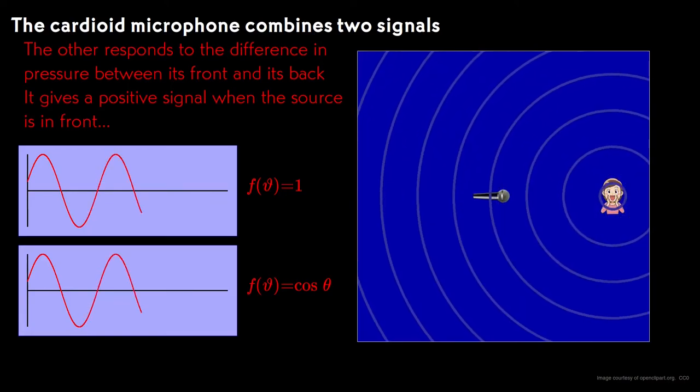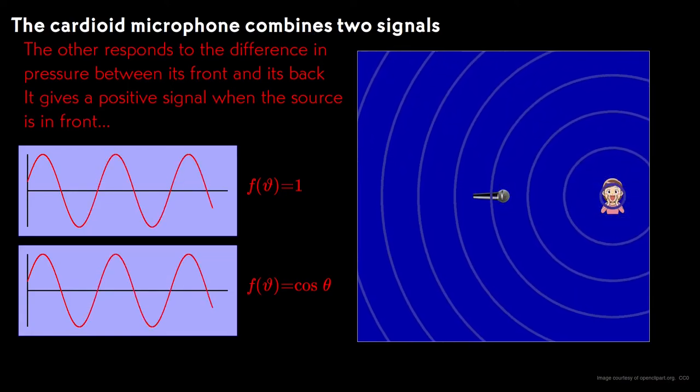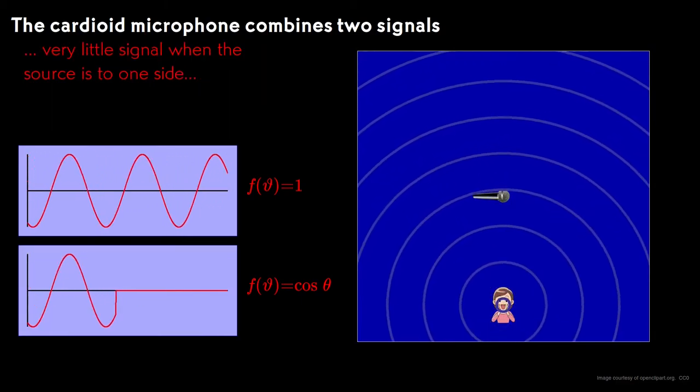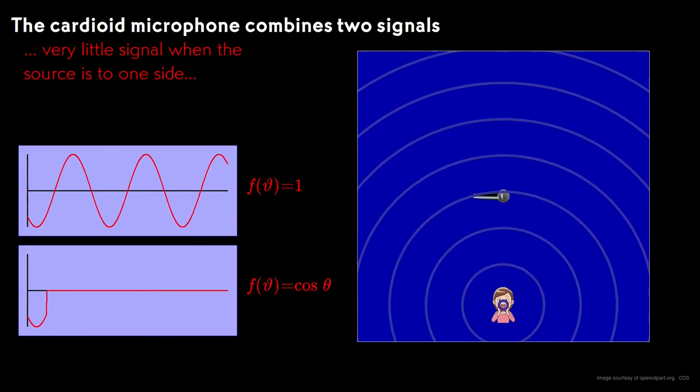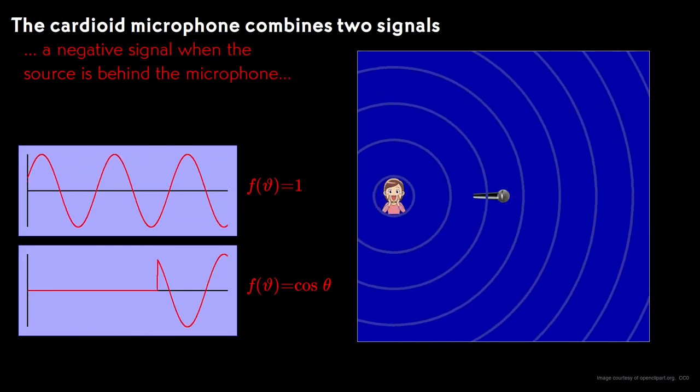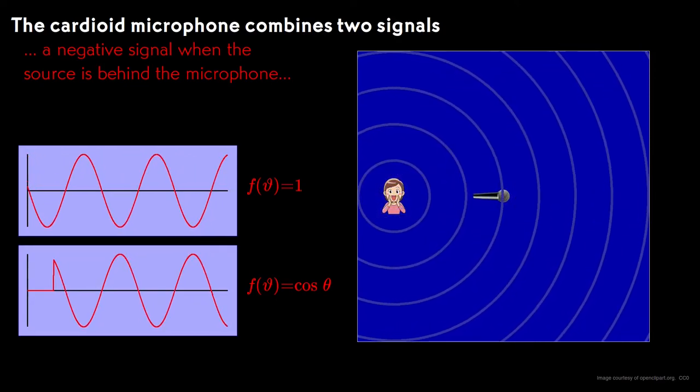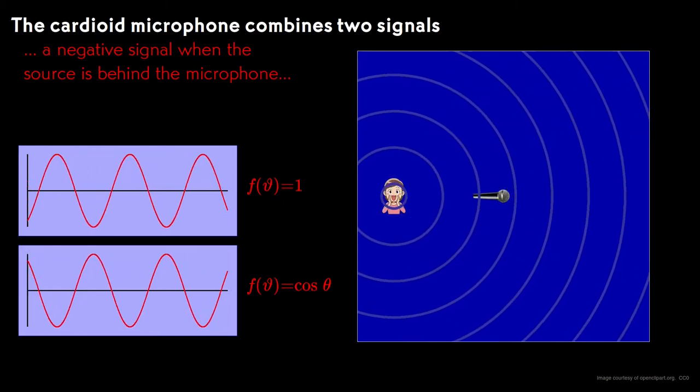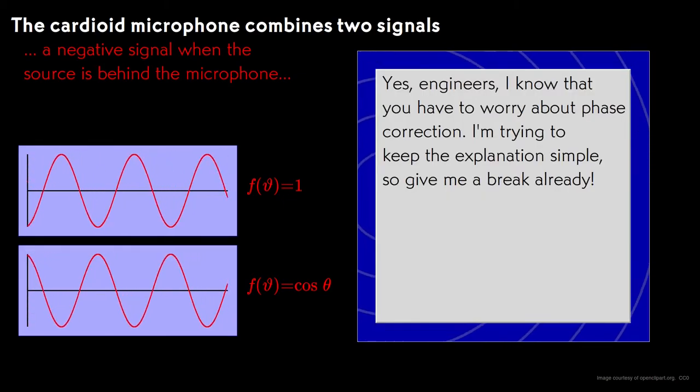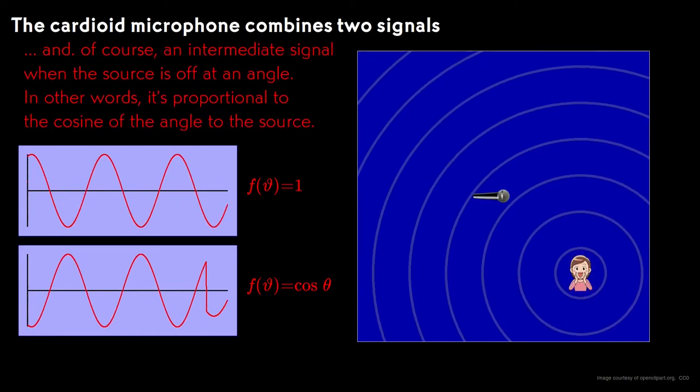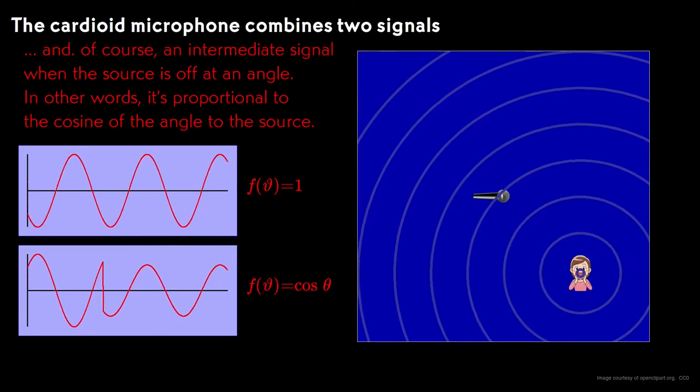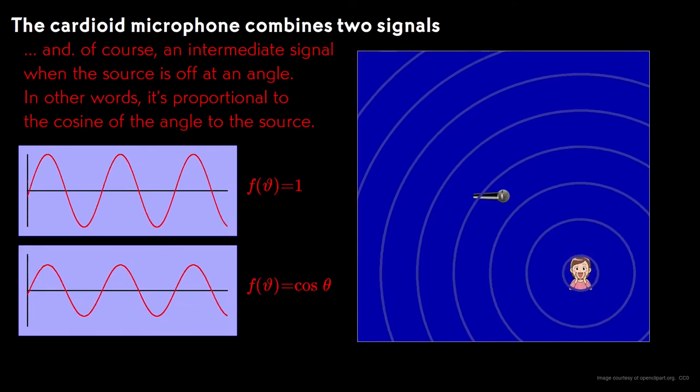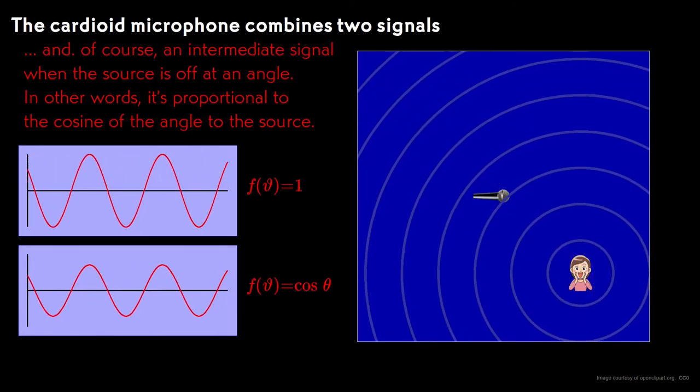The other response is derived from a pressure difference. It's positive when the source is in front. It falls to zero if the source is directly to one side. And it's negative when the source is to the back. See how the peaks of the first response correspond to the troughs of the second. It takes on intermediate values at intermediate angles. And in fact, it's proportional to the cosine of the angle. The sound people call this a bi-directional mic.